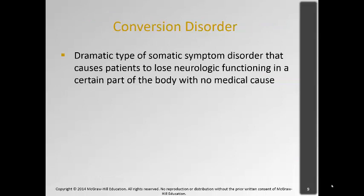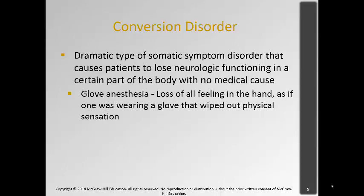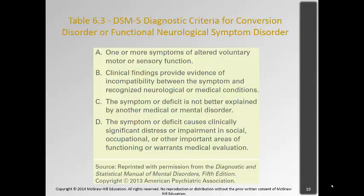Conversion disorder is a dramatic type of disorder where somatic symptoms cause patients to lose neurologic function in a certain part of the body with no medical cause. This was the case of the man I observed who had been physically paralyzed and could no longer walk. One type is called glove anesthesia, where there is loss of all feeling in the hand as if wearing a glove that wiped out physical sensation — there's no neurological basis for this. The DSM-5 diagnostic criteria include one or more symptoms of altered motor or sensory functioning, with no clinical evidence supporting a neurological deficit, and it causes clinically significant distress or impairment in social, occupational, and other areas of functioning.